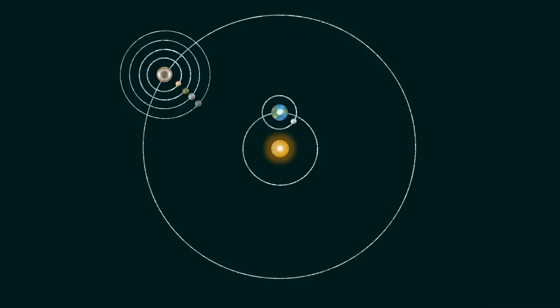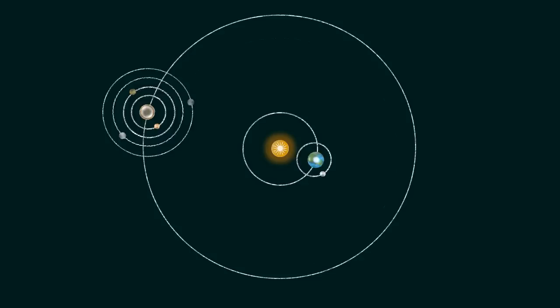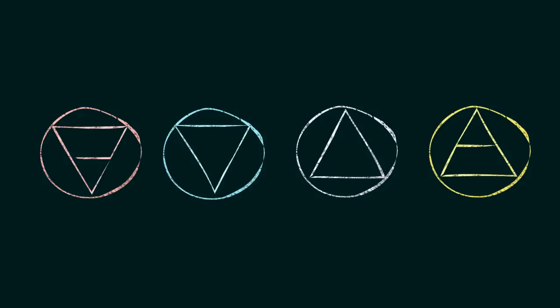The discovery that would unleash physics and lead to our modern understanding of the universe was the realization that all objects, no matter what their composition, have the same natural motion, and that it has nothing to do with the center of the universe.